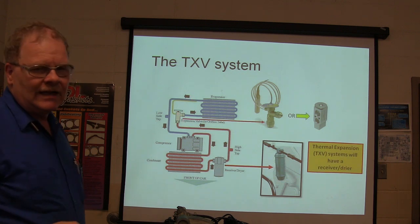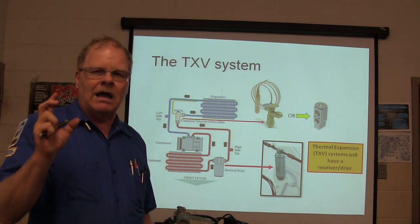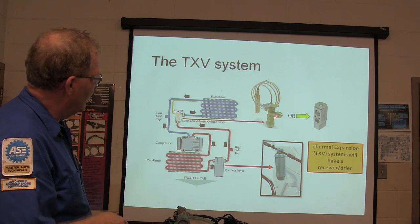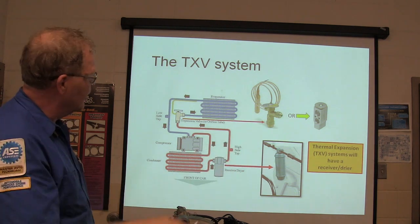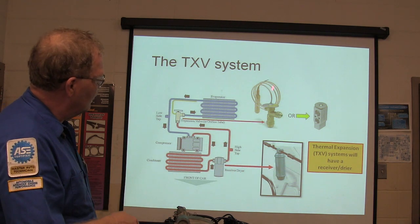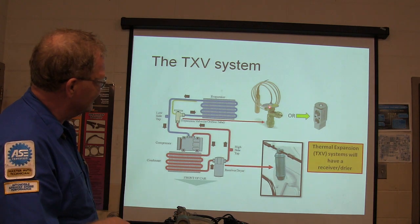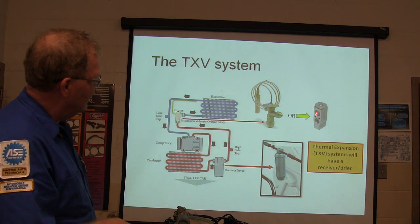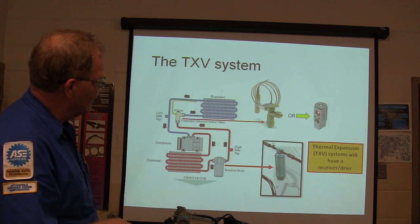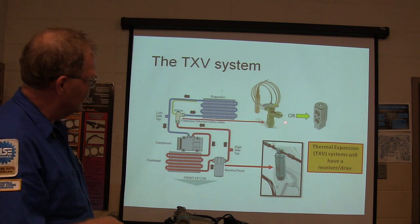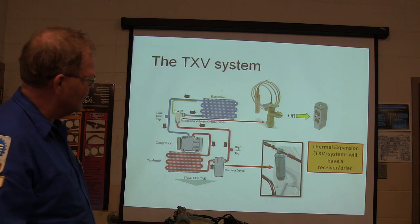Most of the ones you see nowadays are a little expansion block that actually has both tubes going through the same little block. The old-style expansion valve will be one that has that same little sensing tube. The refrigerant is going one way through the big hose and the other way through the orifice — it actually goes in two opposite directions through that thing.